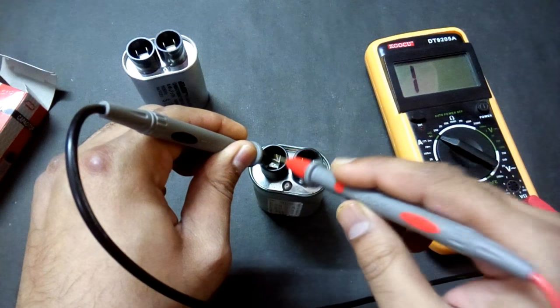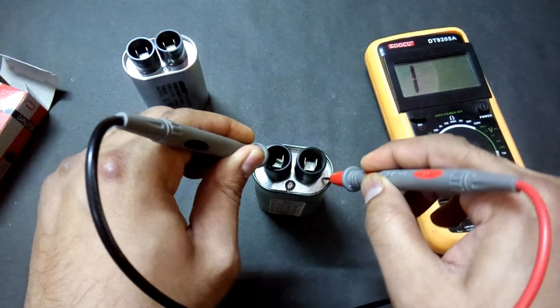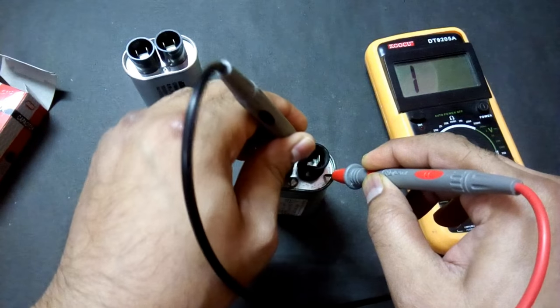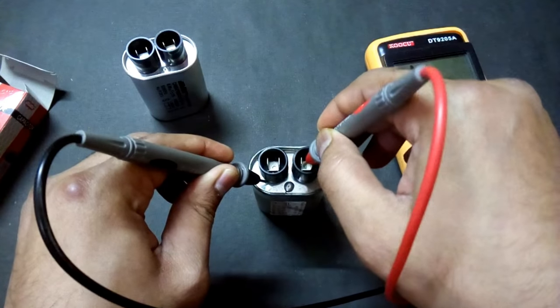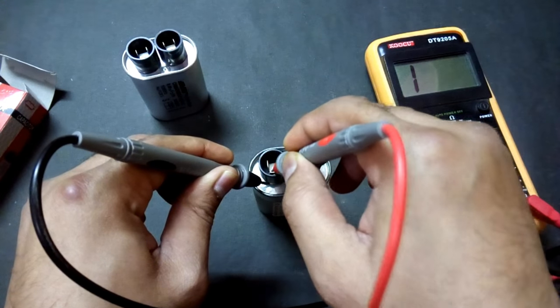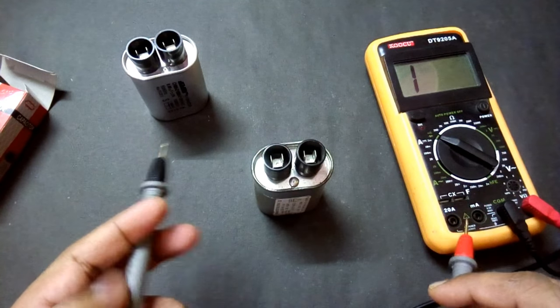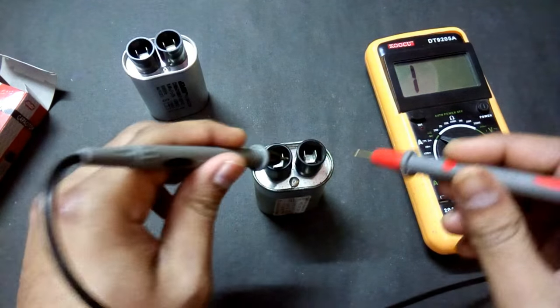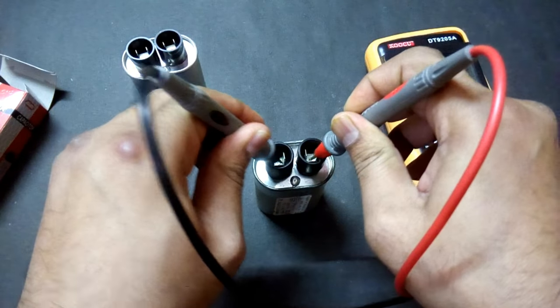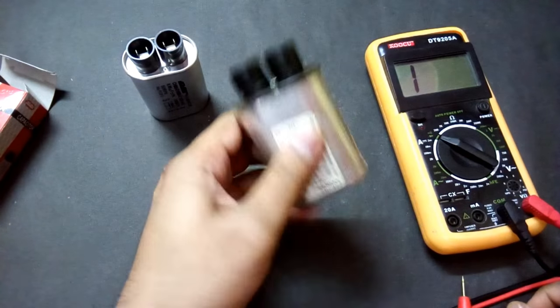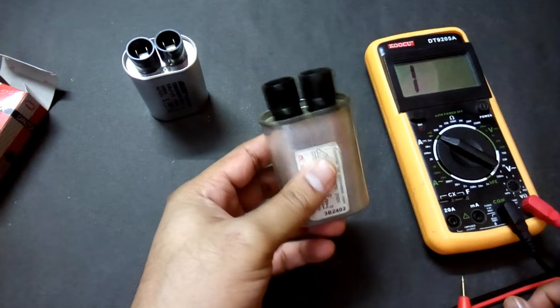Next thing is you're going to check the continuity with the terminal to the body like this. Nothing. That's it, that's the two things. But in this case, the two terminals are shorted, so that means it's very bad. And in this way it's going to blow up your main fuse of the microwave oven. That's what happened in this case.